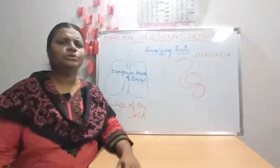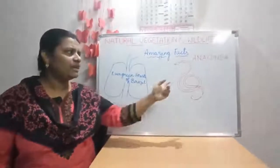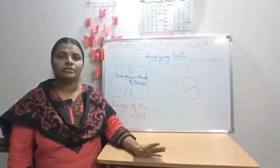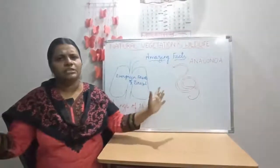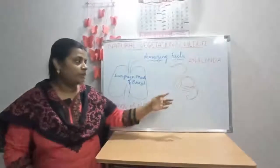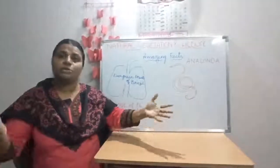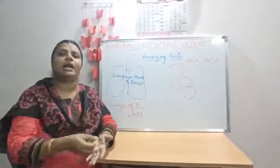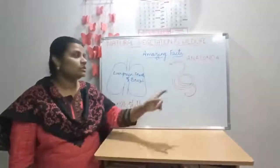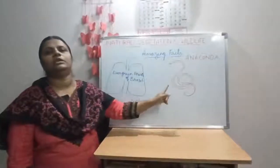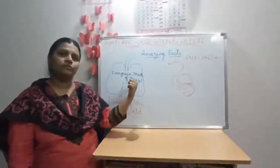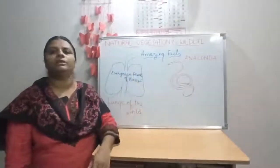One more amazing fact: the anaconda. Have you ever seen an anaconda? It's the world's largest snake — it can even kill and eat a crocodile. This kind of snake is also found in the Amazon forest of Brazil.